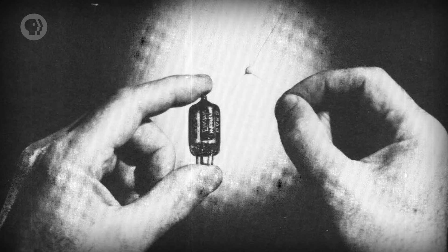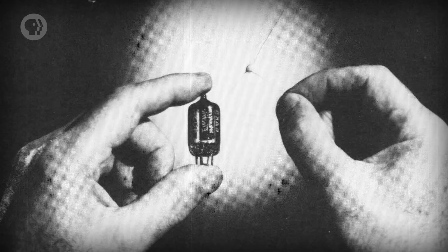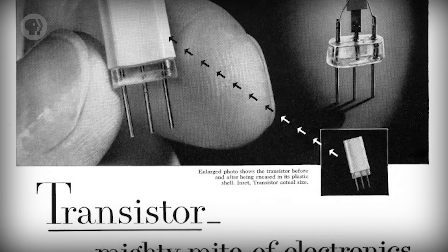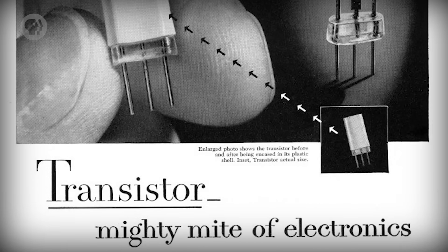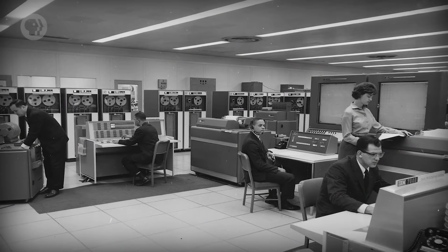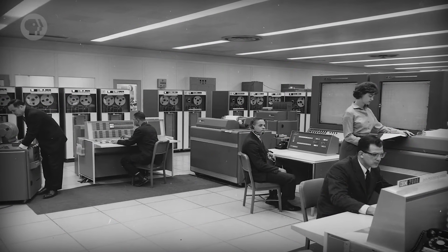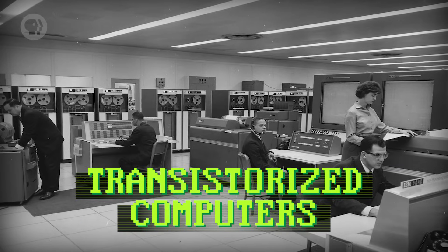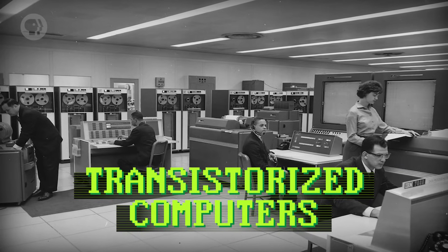By the mid-1950s, transistors were becoming commercially available and being incorporated into computers. These were much smaller, faster, and more reliable than vacuum tubes, but each transistor was still one discrete component. In 1959, IBM upgraded their vacuum tube-based 709 computers to transistors, by replacing all the discrete vacuum tubes with discrete transistors. The new machine, the IBM 7090, was six times faster at half the cost. These transistorized computers marked the second generation of electronic computing.